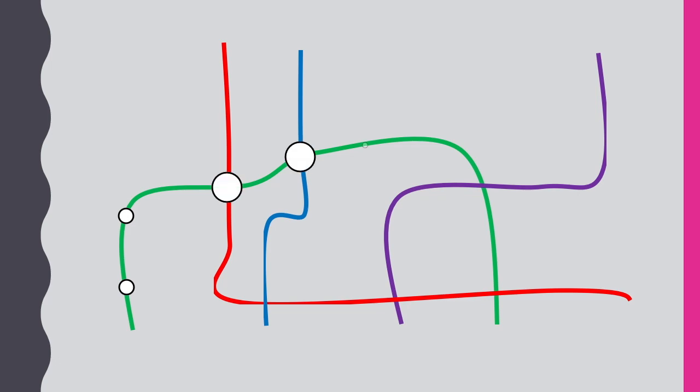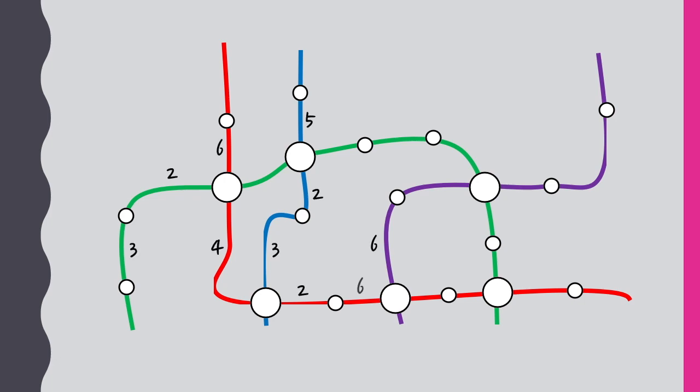Later on, we'll also look at situations where you can assign cost or distance to these edges. For example, if the graph represents a train network, and we want to indicate the time between any two stations.